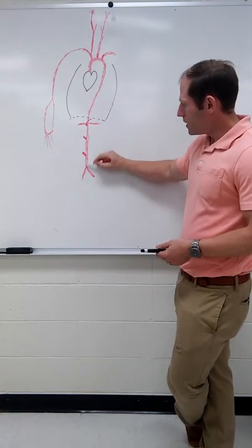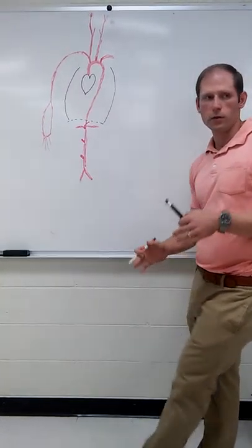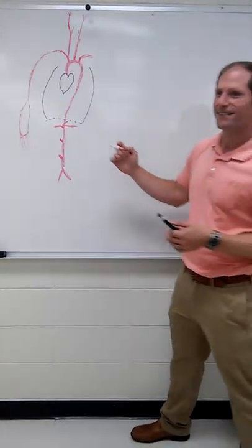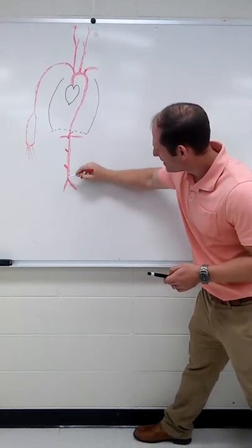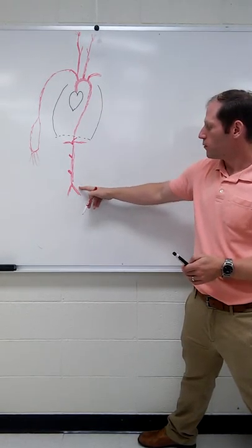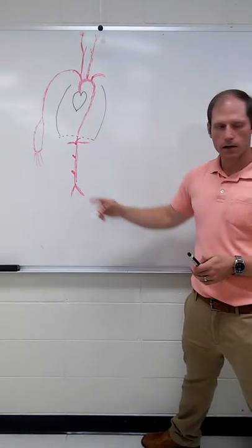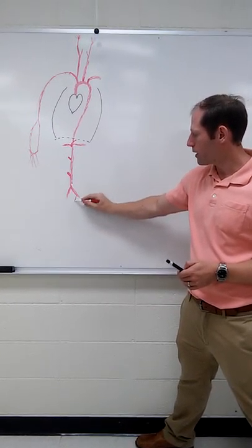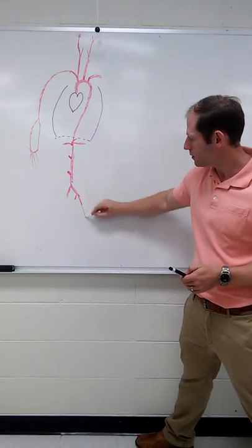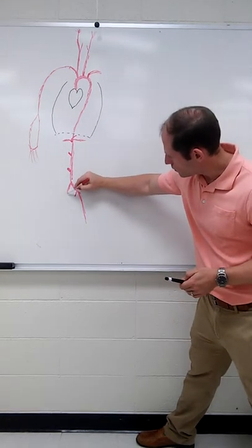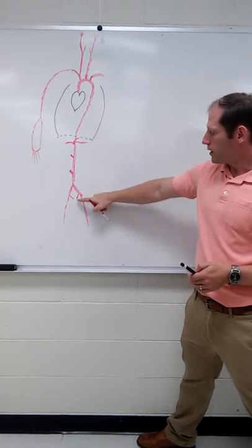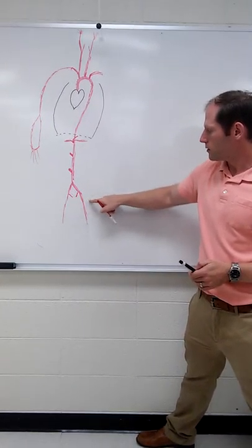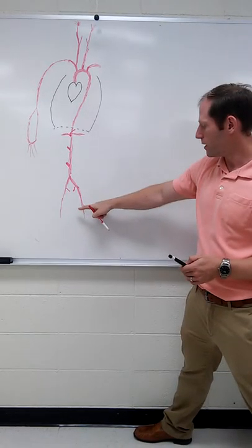So when you get to the fork, this is when it becomes the iliacs. I told you it's wrong, all right, so I'll speed it up. So right here you've got common left and right iliacs. This one will then branch here and continue out this way, this one will branch in this way and come out that way. So you've got internal iliacs, external iliacs. When you hit the body wall,